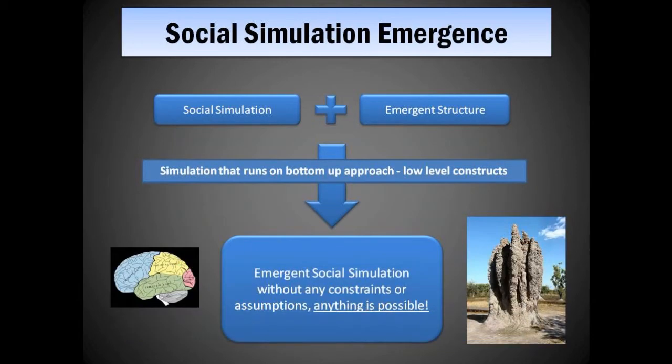Another important requirement of these simulations is that they need to be emergent in structure. In other words, simple social parameters will give rise to complex social interactions. There should be no underlying assumptions or rules that social models need to obey. A bottom-up approach with low-level constructs will ensure that any conceivable social model will be able to emerge from an infinite spectrum of social parameters provided.